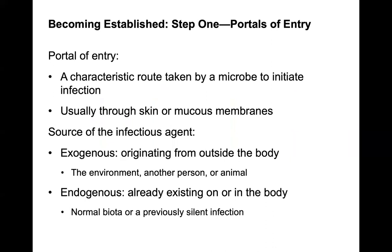Looking at the portals of entry, this is the characteristic route taken by a microbe to initiate infection, usually through the skin or mucous membranes. The source of the infectious agent also plays a role. Exogenous means it originates from outside the body — the environment, another person, or an animal. Endogenous already exists on or in the body, as part of your normal biota or a previously silent infection.